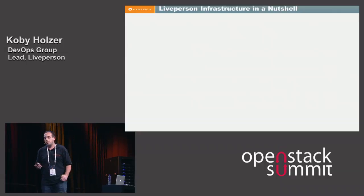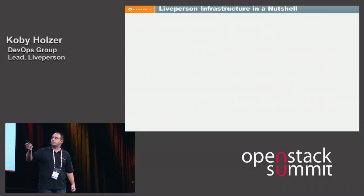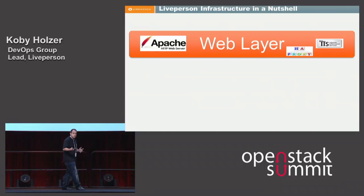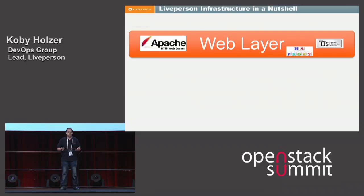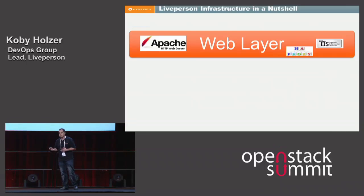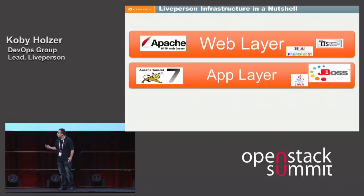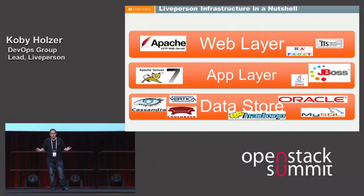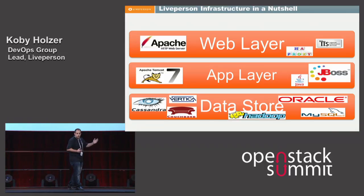A quick overview of how LivePerson's infrastructure looks in a nutshell. We have three tiers. The first tier is the web tier, like any other normal SaaS company — we have Apache and HAProxy, and some IIS servers for legacy systems. In the app layer, we have mainly Tomcat and JBoss; it's all Java and Scala for us. And in the data store, we have a bunch of them: Cassandra, Vertica, Couchbase, MySQL, Oracle, and Hadoop.